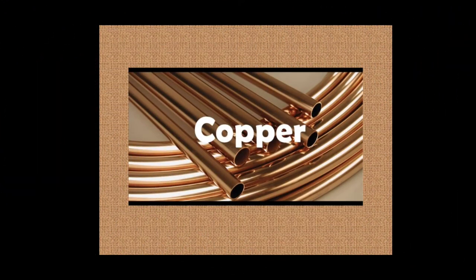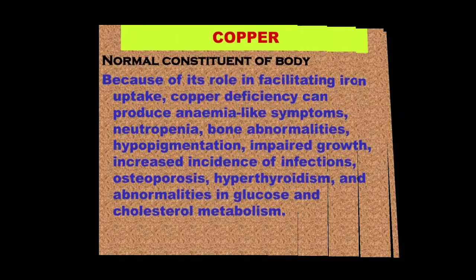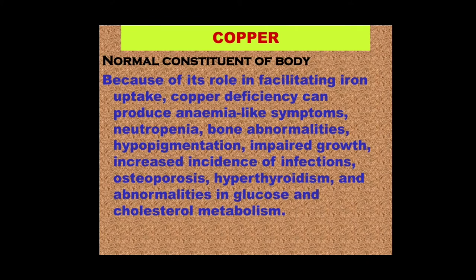Let us take a look first at copper — a beautiful metal, kind of reddish with a golden hue. Copper is a normal constituent of the body, and that is an important point. Because of its role in facilitating iron uptake, copper deficiency can produce anemia-like symptoms, neutropenia, bone abnormalities, hypopigmentation, impaired growth, increased incidence of infections, osteoporosis, hyperthyroidism, and abnormalities in glucose and cholesterol metabolism.